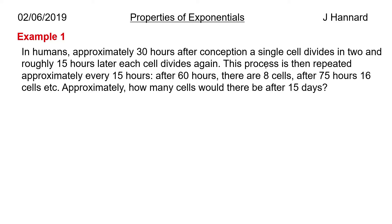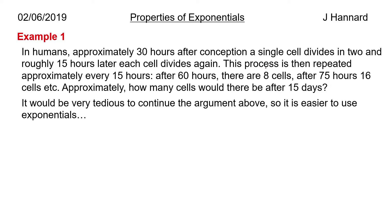Example 1: In humans, approximately 30 hours after conception a single cell divides in 2, and roughly 15 hours later each cell divides again. This process is then repeated approximately every 15 hours. After 60 hours there are 8 cells, after 75 hours 16 cells, and so on. Approximately how many cells would there be after 15 days? 15 days is 15 times 24, so 360 hours.